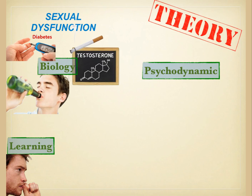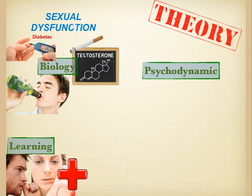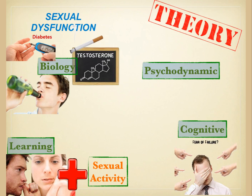From a learning perspective, we look at the role of conditioned anxiety — anxiety being linked to sexual activity, thus learning that sex or sexual situations are anxiety-producing. Sexual fulfillment through trial and error with sexual partners, and the messages learned from those experiences, influences the degree or type of sexual dysfunction one may experience. From a cognitive perspective, irrational attitudes and beliefs — faulty thinking, catastrophizing, globalizing, fear of failure — all interfere with a positive sexual experience with a partner.